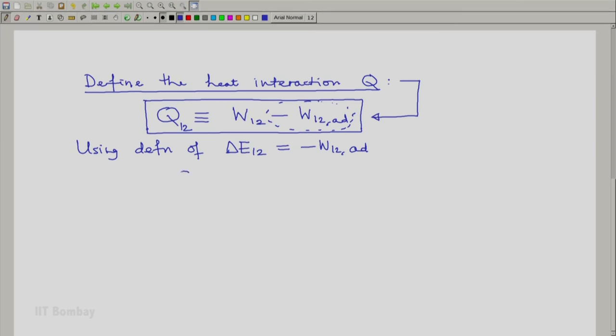we can now write q12 is w12 plus delta e12.